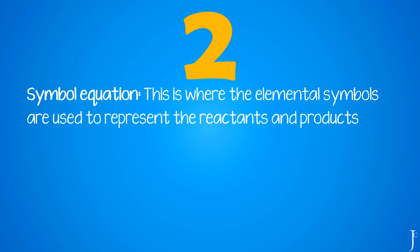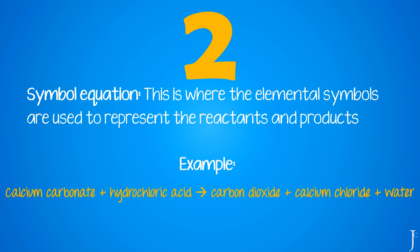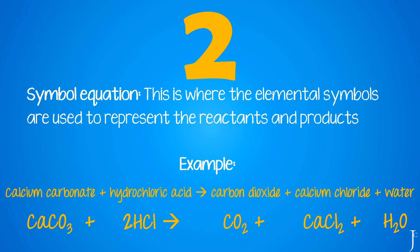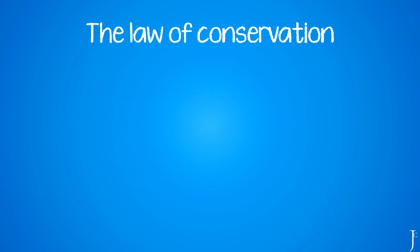The second way to represent a chemical reaction is by using a symbol equation, where we use elemental symbols to represent the reactants and products. For our previous example of calcium carbonate reacting with hydrochloric acid to make carbon dioxide, calcium chloride, and water, we find the elemental symbols from the periodic table to convert the word equation into a symbol equation, as shown below.